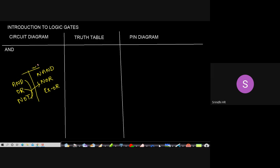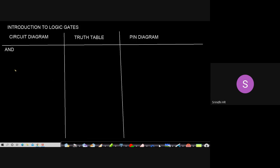Let's go one by one. First, the AND gate. A logic gate is an electronic circuit having one or more inputs and producing one output. The first input is named A, second input is B, and output is represented as Y. For the AND gate with two inputs A and B, Y is equal to A dot B — it is the product of the two terms.